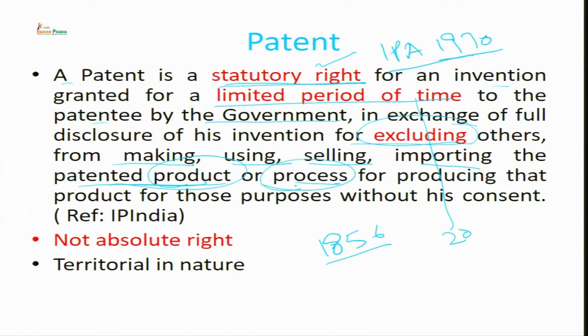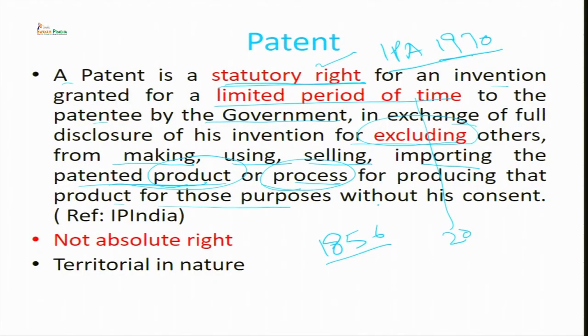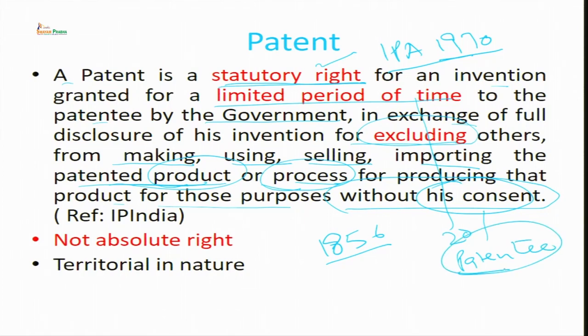After the 2005 amendment in the Indian Patent Act, product patent is also available. No one can now infringe, no one can make generic medicine without permission of the patent holder. No one can produce that product without his consent. His consent implies the right of the patentee. One has to take a license or assignment from the patentee for producing such a product made by the invention of the patentee.